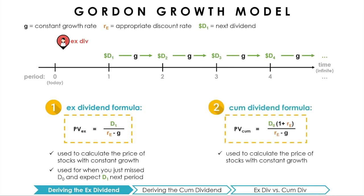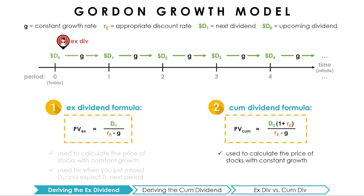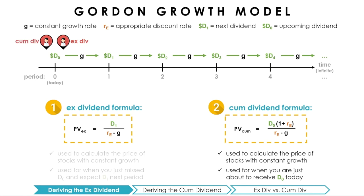On the other hand, the cum-dividend formula has D0 in the numerator, which is the amount of this period's dividend. Thus, the cum-dividend formula is used to calculate the price of a stock in situations where this period's dividend is just about to be paid — in other words, as an investor, we anticipate the dividend is just about to come. But why are these formulas the way they are?